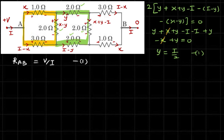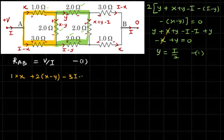Now let's take the second loop, going clockwise. The resistors are different here. Starting from one node: the drop across the 1 Ω with current x is 1·x; the drop across the 2 Ω with current x minus y is +2(x − y); and entering the 3 Ω at the negative terminal gives −3(i − x). Setting the sum to zero gives equation 2.